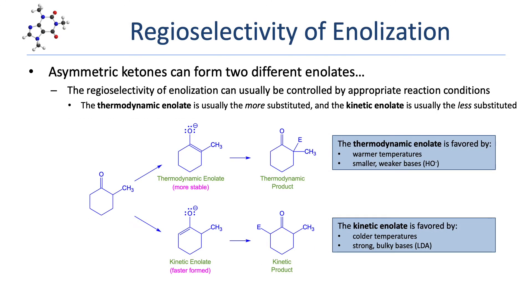In some cases, enolization can result in the formation of two unique enolates. This is most often encountered in the enolization of asymmetric ketones — those with two different carbon groups attached to the carbonyl. In the example, we see the base-promoted enolization of 2-methylcyclohexanone. Deprotonation of the more highly substituted alpha carbon gives a more highly substituted, more stable alkene — this is the thermodynamic enolate. In contrast, deprotonation of the less substituted alpha carbon proceeds more rapidly due to the less cluttered steric environment, giving the kinetic enolate.